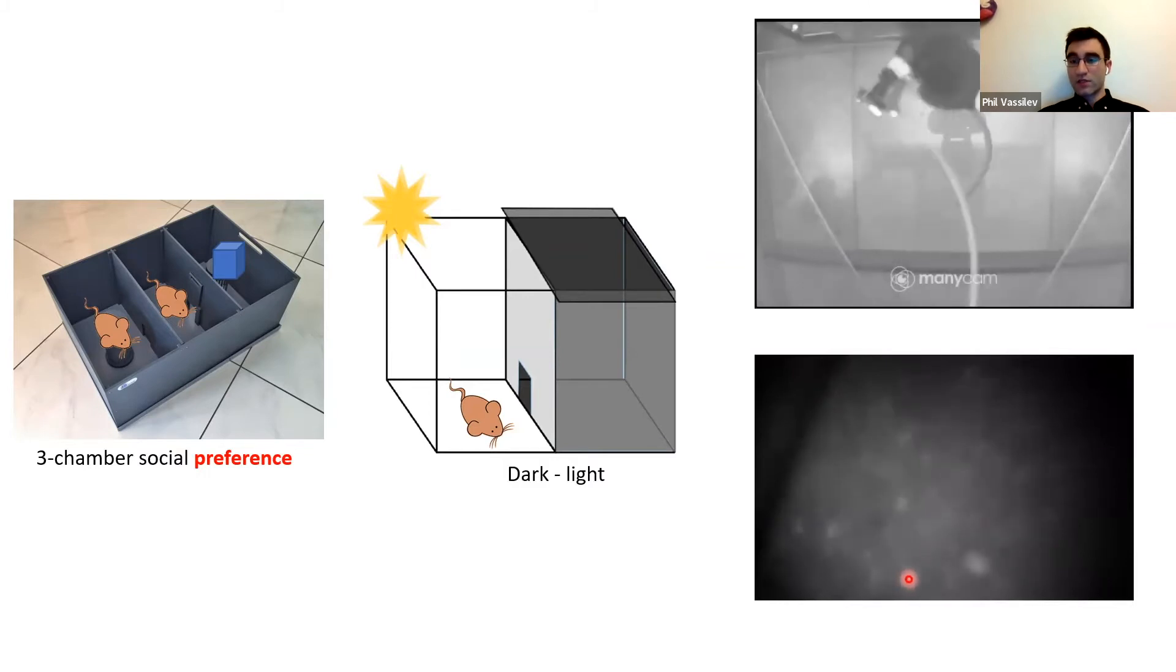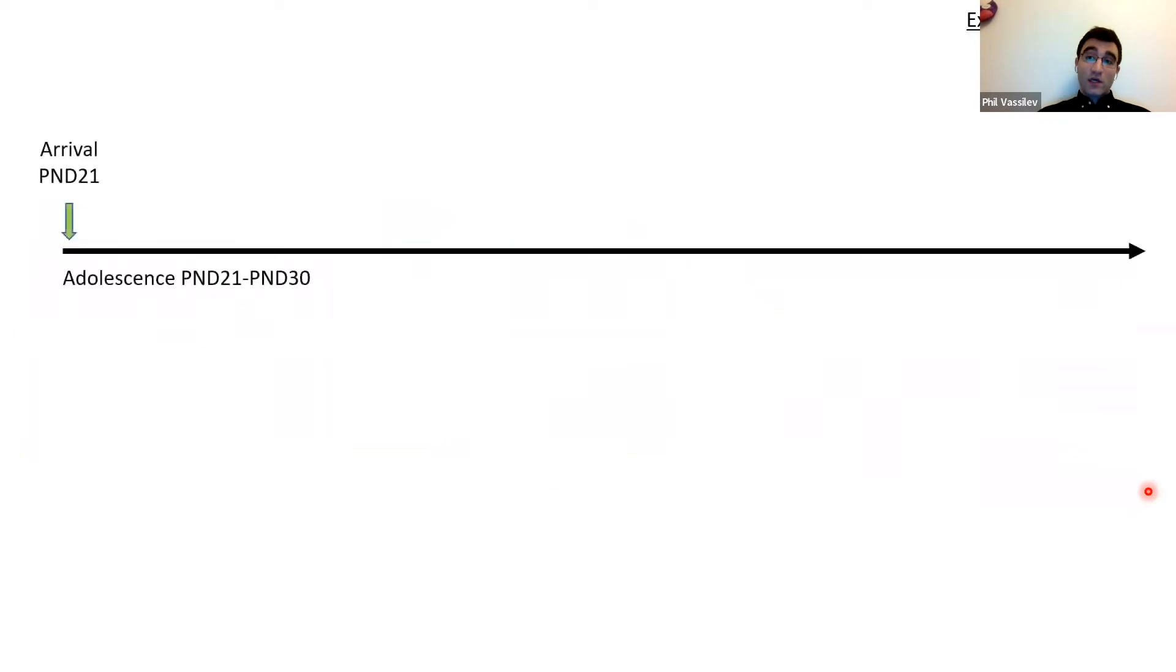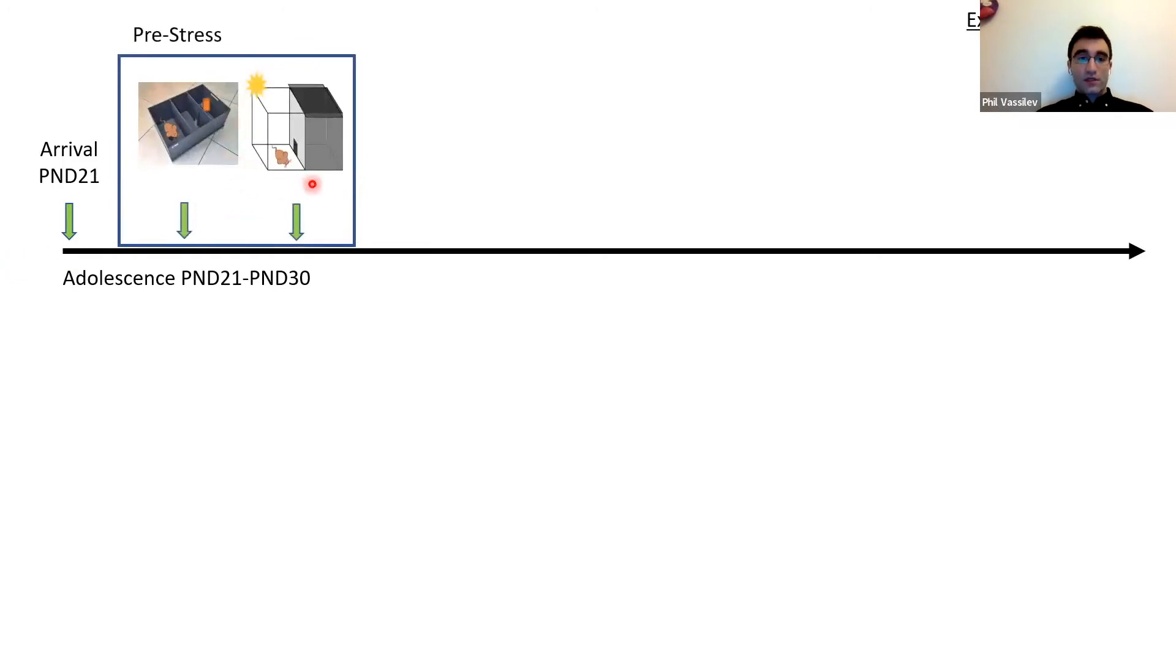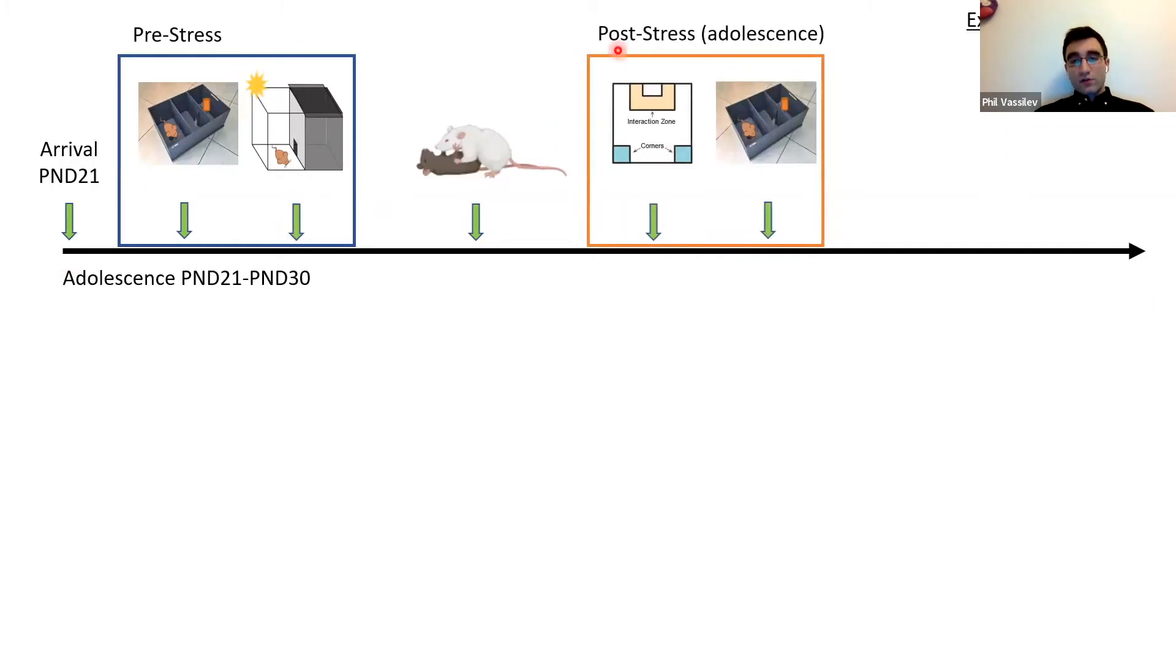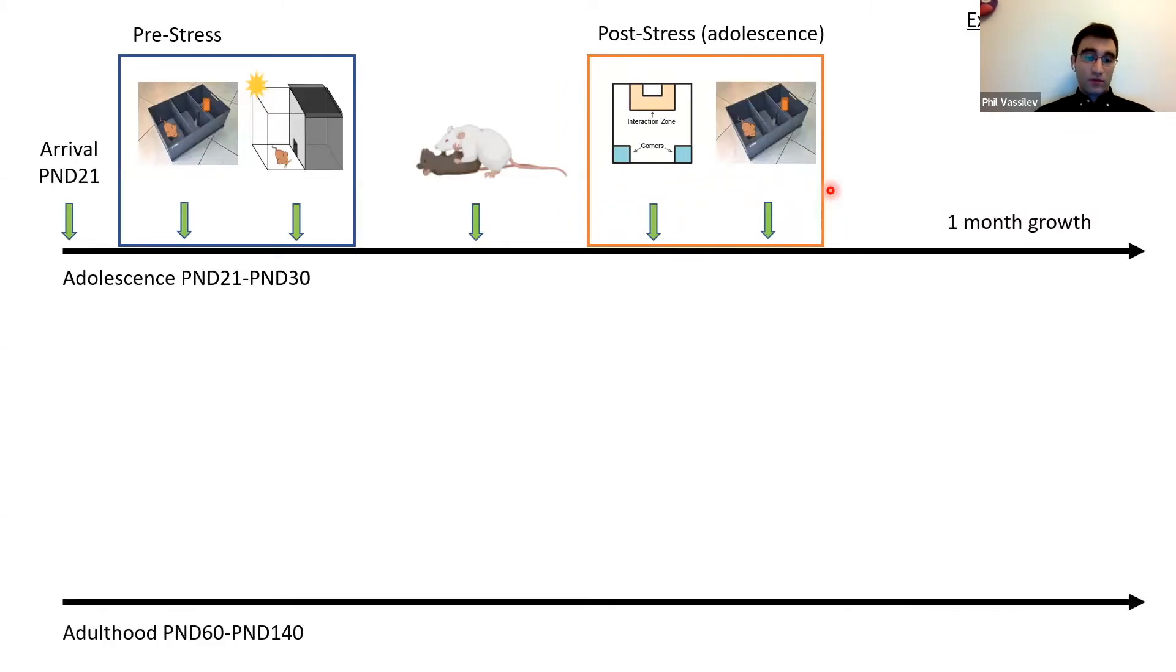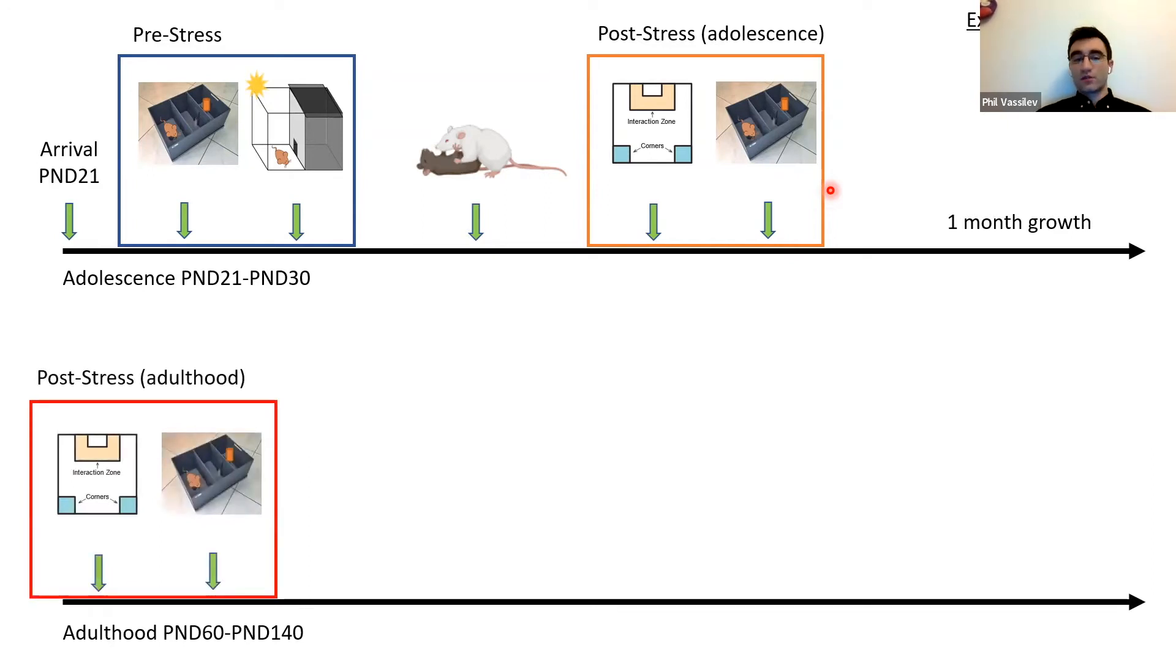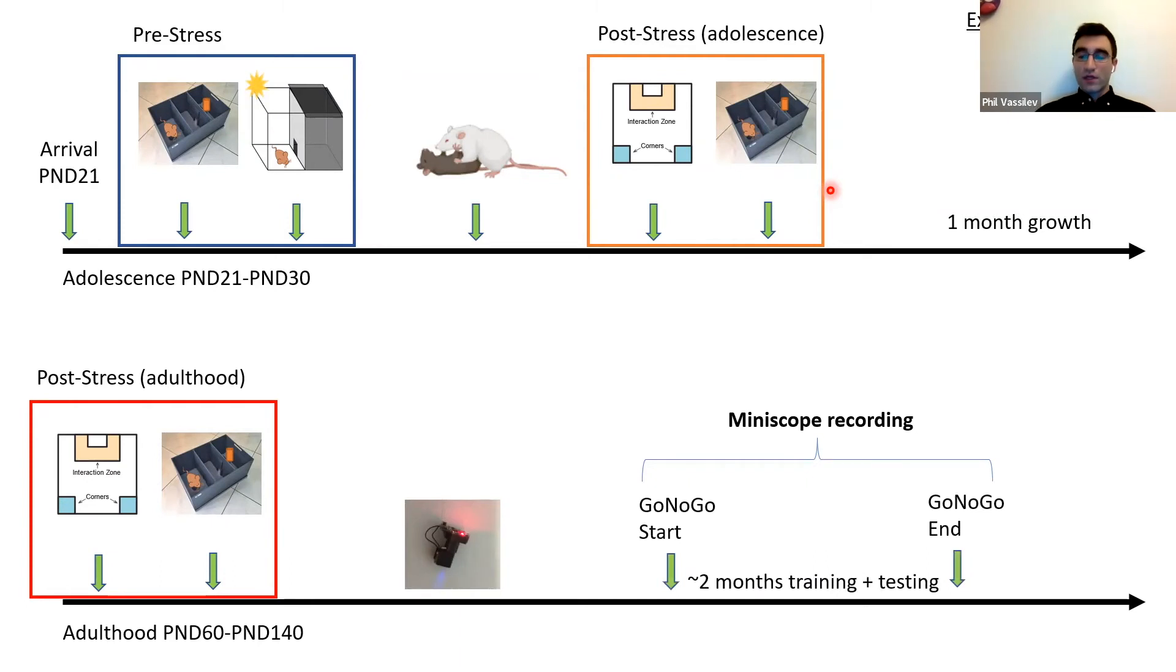We designed a longitudinal study to see how these behaviors change over time. We received mice at postnatal day 21, the beginning of early adolescence, which is the critical period for prefrontal cortex dopamine development. We pre-screened mice on the social preference test and dark-light test, then exposed them to social defeat stress within early adolescence. Immediately after stress sessions, we tested them on the social interaction test, then retested on social preference. We let them grow for a month until adulthood, postnatal day 60, when we retested them on social interaction and social preference, then ultimately implanted them with miniscopes and recorded calcium activity during go/no-go training and the task itself.